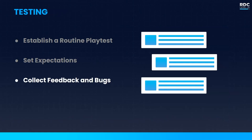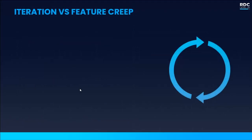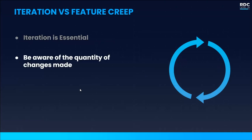Capture all feedback and bugs experienced during the play test — production management software is going to be invaluable for this. Leads should spend time prioritizing and determining what feedback to act upon. Iteration is essential for development; it allows us to find the best experience possible. There is never a case where our design goes from brainstorming all the way to the live game unchanged — we constantly want to be improving the experience. Something that sounds amazing on paper might actually play out very poorly in your game, and feedback helps us refine this.